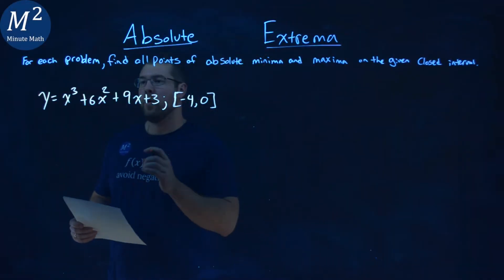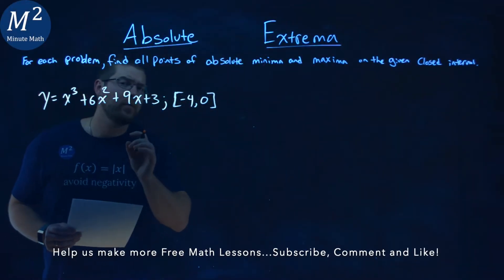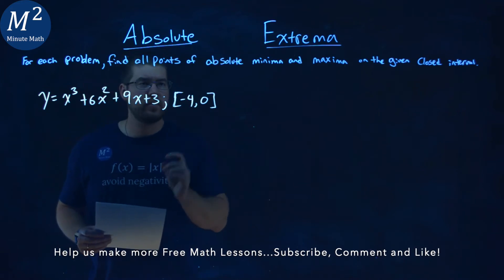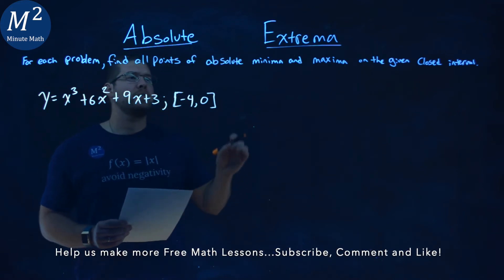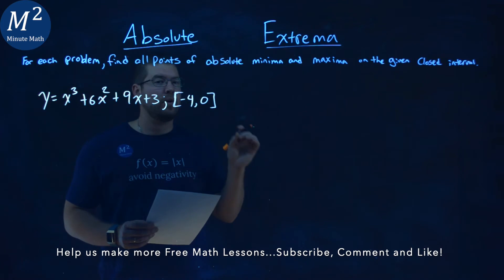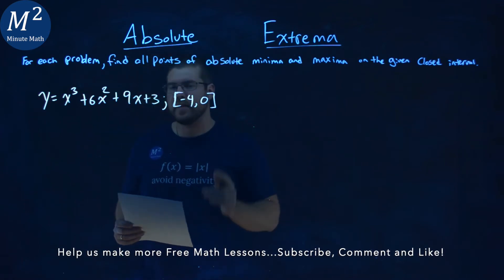We're given this problem right here. y equals x to the third power plus 6x squared plus 9x plus 3. We want to find all points of absolute minima and maxima on our closed interval from negative 4 to 0.